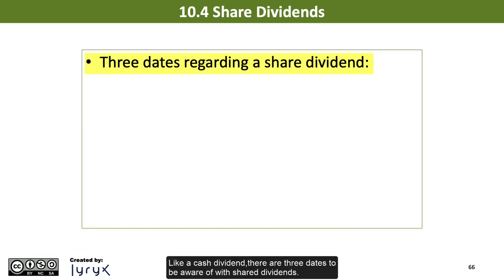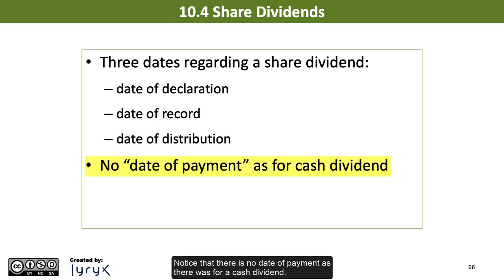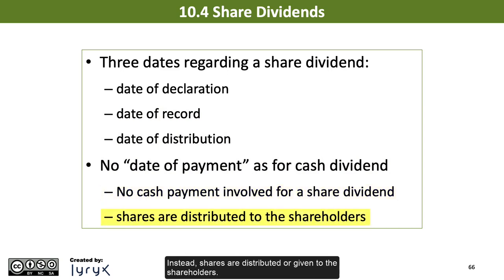Like a cash dividend, there are three dates to be aware of with share dividends: the date of declaration, the date of record, and the date of distribution. Notice that there is no date of payment as there was for a cash dividend. This is because there is no cash payment involved for a share dividend. Instead, shares are distributed, or given, to the shareholders.